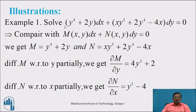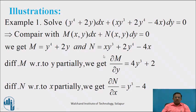Example 1: Solve the differential equation (y⁴ + 2y)dx + (xy³ + 2y⁴ - 4x)dy = 0. Comparing with M dx + N dy = 0, we get M = y⁴ + 2y and N = xy³ + 2y⁴ - 4x.